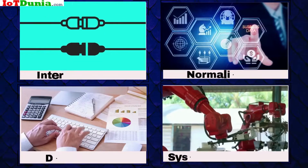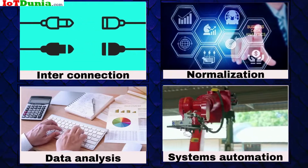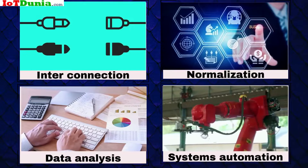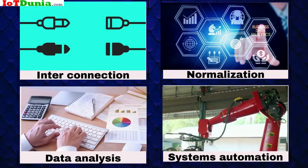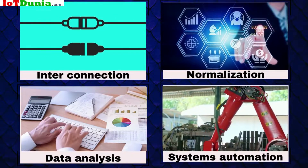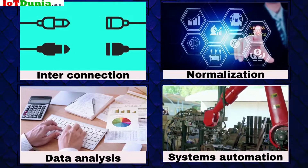The Industrial Internet of Things is mainly identified by its four categories: Interconnection, Normalization, Data Analysis, and Systems Automation.